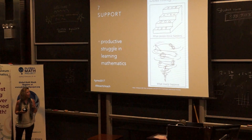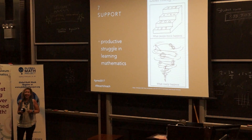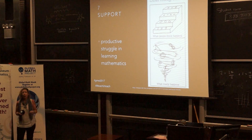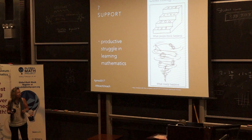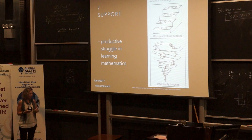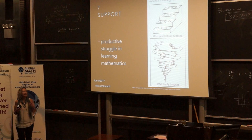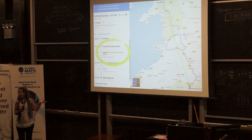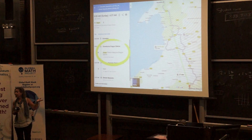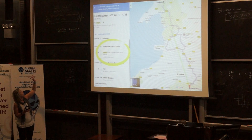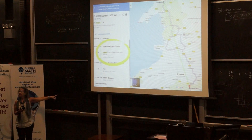Traffic can be frustrating, but in the classroom that's okay. We want to support that productive struggle. We want students to be comfortable with uncomfortable situations — we want them to be thinking about those unusual events. And sometimes that dragon is an option and not an obstacle. This is a real Google Maps search: if you want to go from Snowdon to Brecon Beacons, a dragon is an option.